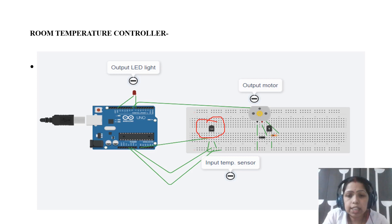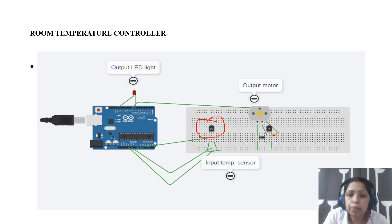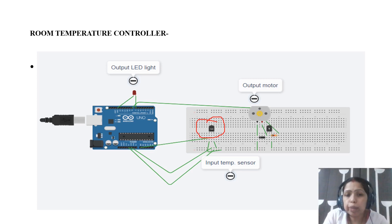This is the temperature sensor — there are three terminals. Two terminals are connected to the ground and the positive power supply, and the middle terminal is the output terminal of the temperature sensor. Whatever temperature is detected from the environment will be transferred into the Arduino.